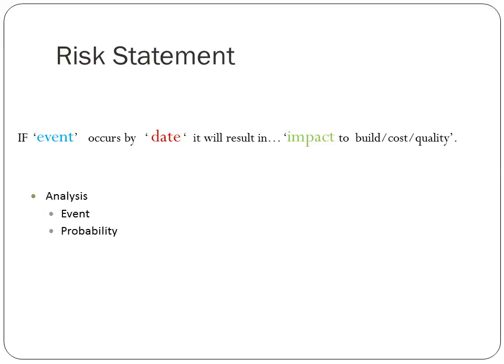Once we have the risk statement in hand, we do an analysis and look at the event. We assign it a probability — how likely is this to occur? We look at the impact, rate the probability and impact, and give this particular risk a priority ranking. In most projects, we can only address the top three or the top ten most significant risks, so we want to prioritize our time and our resources.